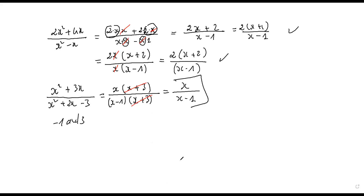Student question: didn't you make a mistake on the first one by extending the two? Normally you should multiply it — when you wrote two x plus two over x minus one, isn't it supposed to be two times x equals 2x, two times two equals four?